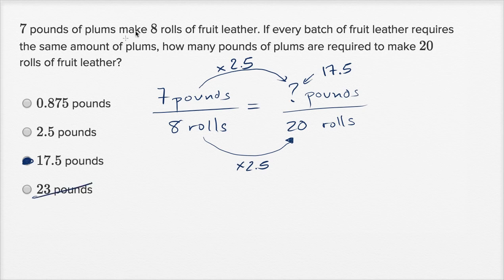And if we're making more rolls than we were able to make with the seven pounds, we're not going to be able to have fewer pounds there. So, you could have actually ruled out all of them just based on the logic to get to 17.5.